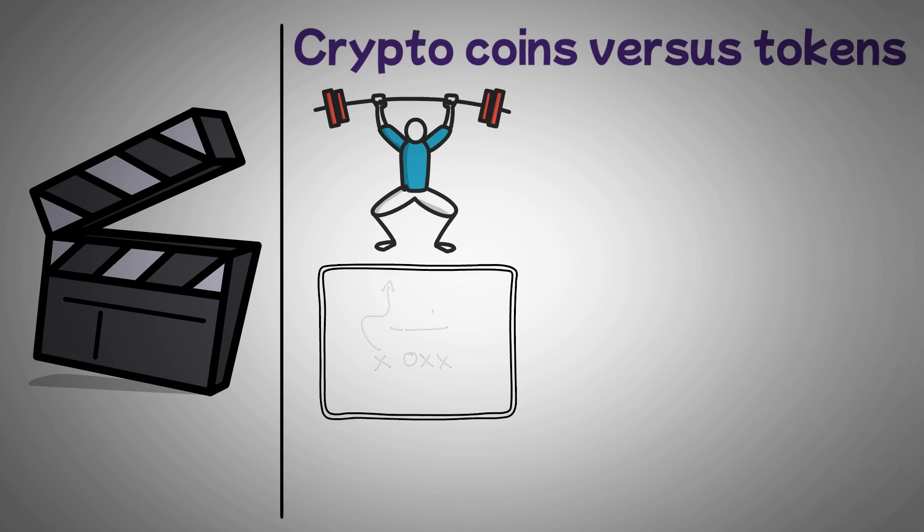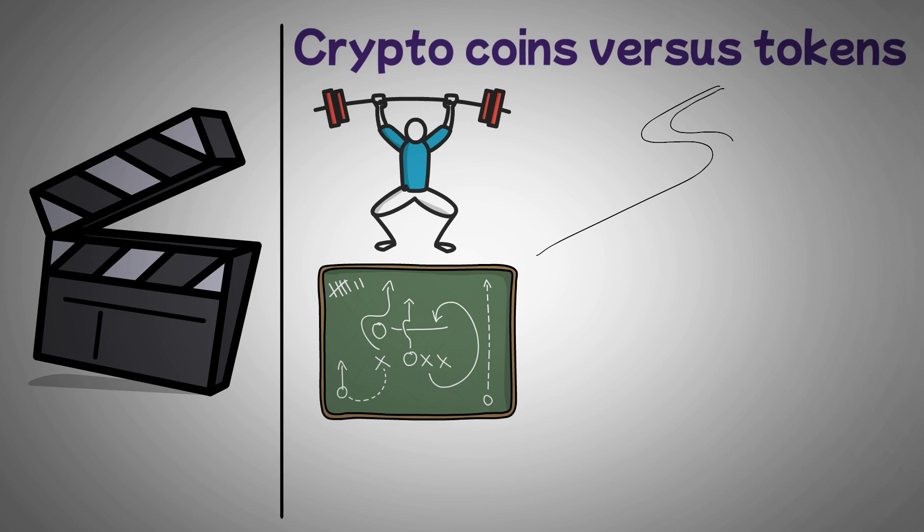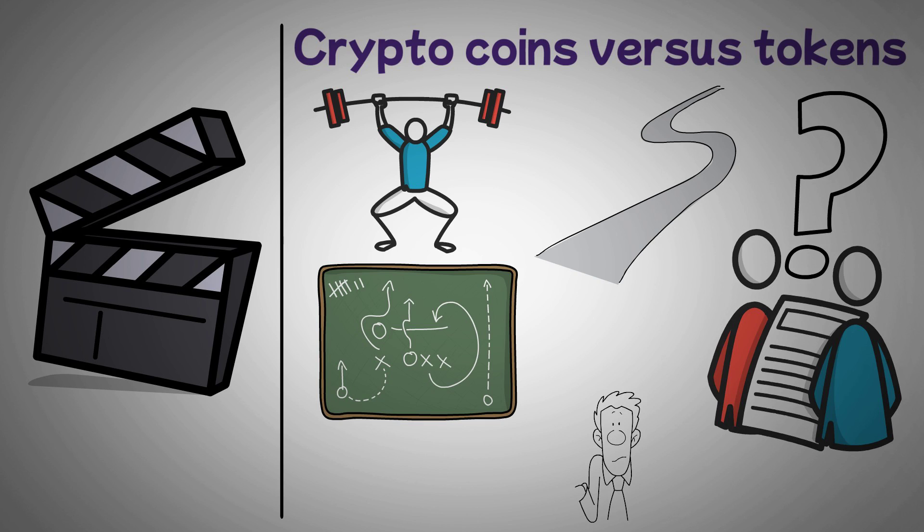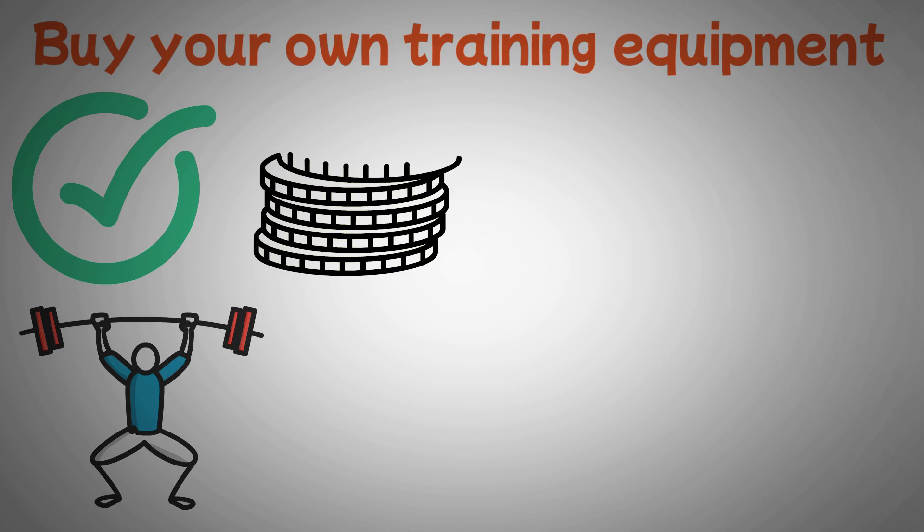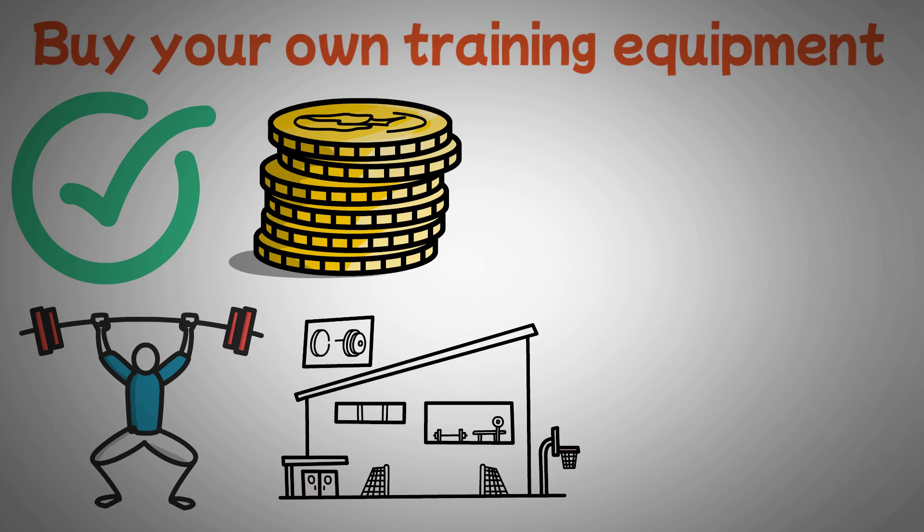Imagine that you've decided to start working out, planning out your routine. You've come to a crossroads: should you purchase your own equipment or sign up for a gym membership? Both positions have their own pros and cons. If you were to buy your own training equipment, this would allow you to be independent and train whenever you like. On the other hand, it would cost a lot of money and would require you to build a mini gym for yourself all on your own.